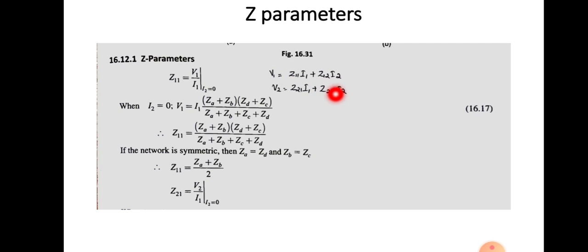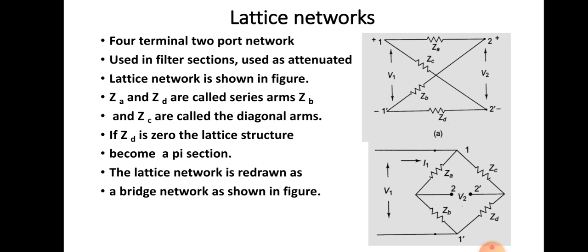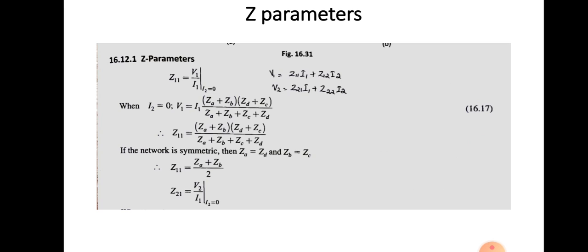Those two parameters we are going to find out first. When I2 = 0, the output port is open-circuited, so that portion will not be present in the circuit. This gives us the structure to find Z11 = V1 / I1. We want to find V1 first, and then we can find Z11. Whenever I2 = 0, V1 is the voltage across points 1 and 1-dash.